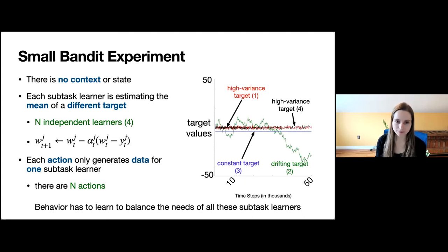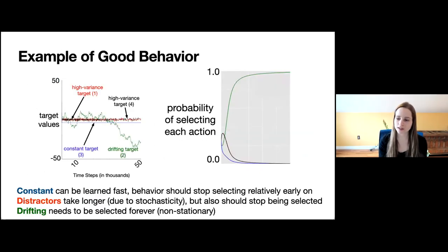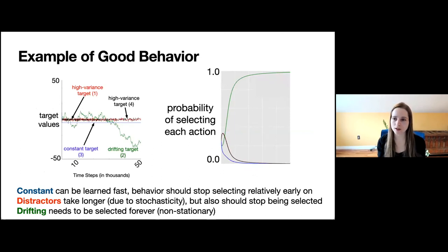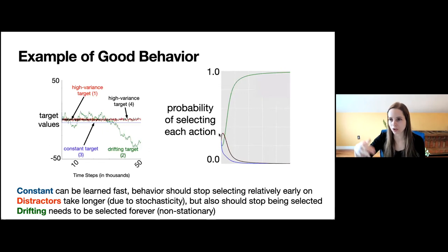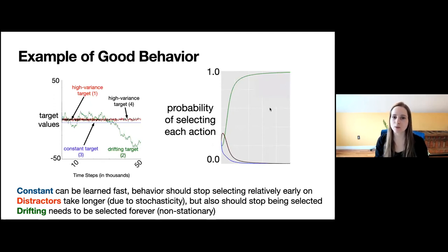What's good behavior here? We should expect that initially the behavior selects all four actions somewhat equally so all subtask learners get some data. But the constant target is easy to learn — so quickly it should stop selecting that arm. The noisy subtasks take longer because stochasticity requires more samples. The drifting target constantly changes, so the behavior should eventually focus solely on generating data for that drifting arm. This is the nice conceptual exercise: it's clear what ideal behavior should be.